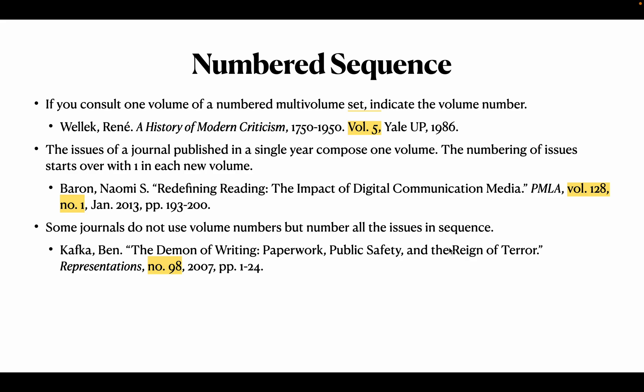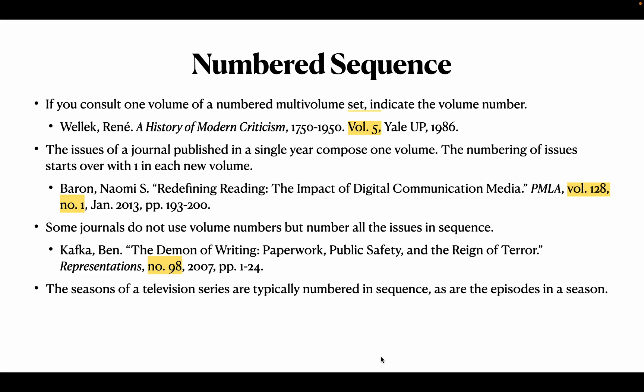Some journals do not use volume numbers but number all the issues in sequence. Ben Kafka has written 'The Demon of Writing: Journalist Representations.' The journal 'Representations' uses only a sequential number — number 98 means 98 issues have been published in total.